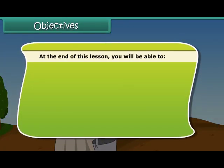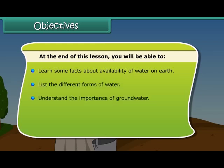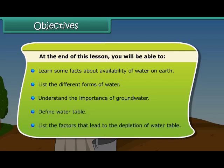At the end of this lesson, you will be able to learn some facts about availability of water on earth, list the different forms of water, understand the importance of groundwater, define water table, and list the factors that lead to the depletion of water table.